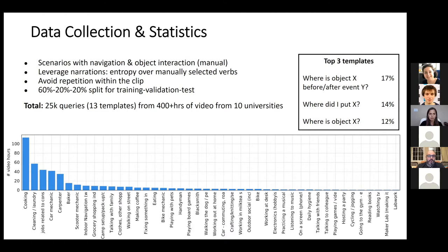The NLQ task has 13 query templates, coming from 400-plus hours of video across 10 universities, yielding 25,000 language queries. For the baseline method, we adapted the 2D-TAN method from video-language grounding, which correlates video representations with language query representations to find a similarity measure between the two modalities. We use top-k recall under temporal IoU (tIoU) at 0.3 as the metric.